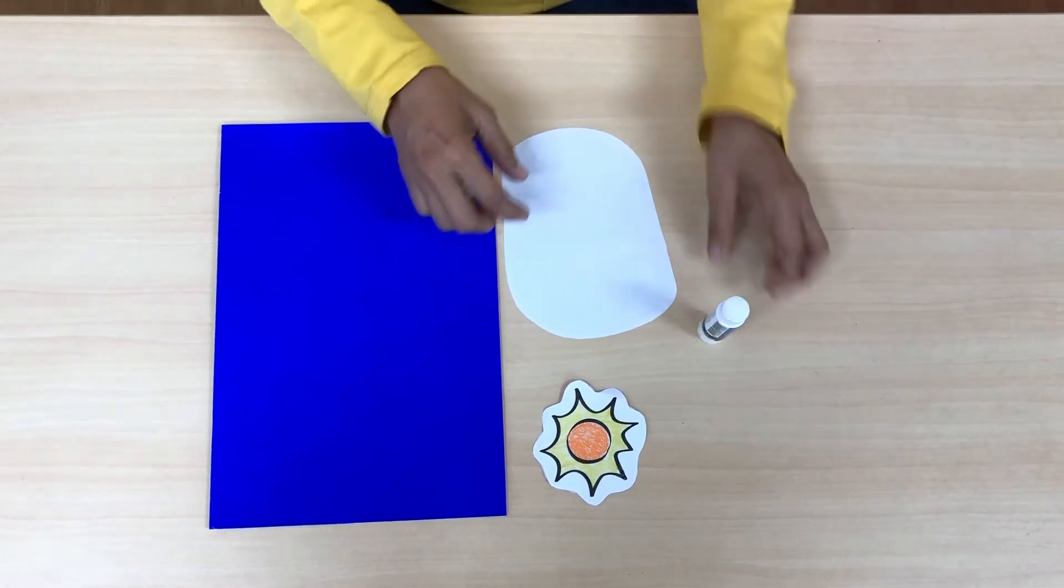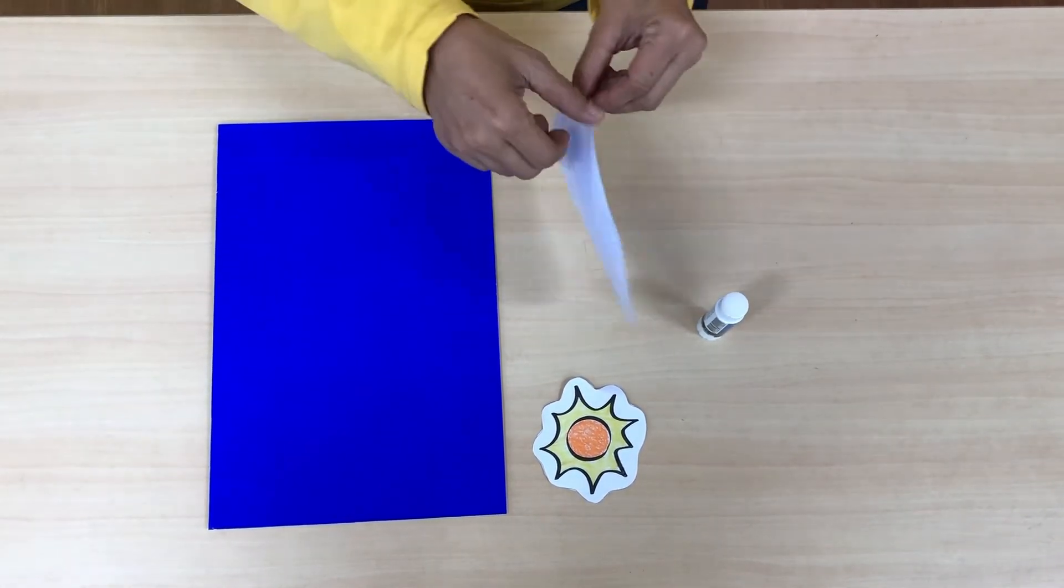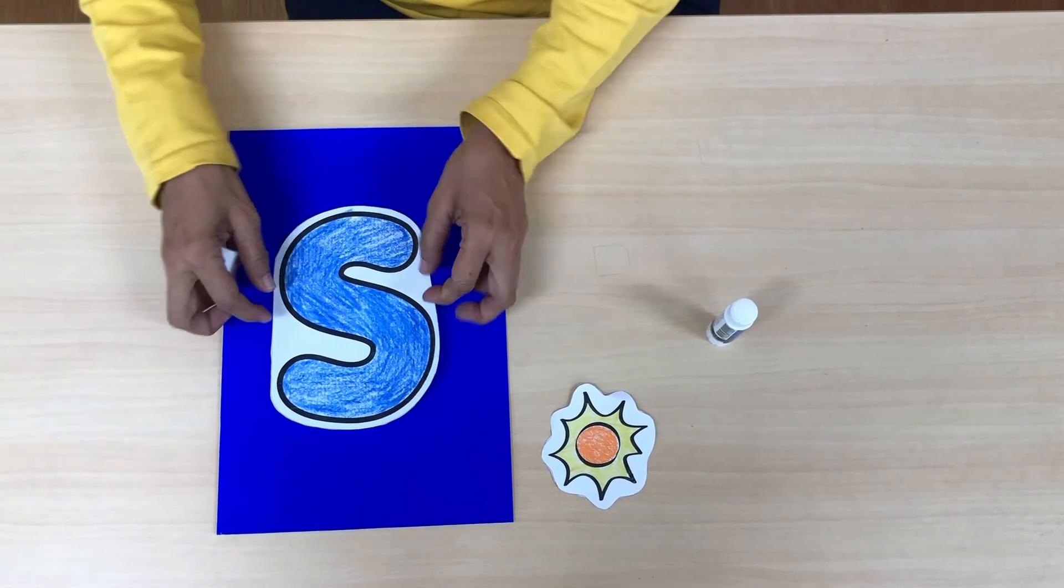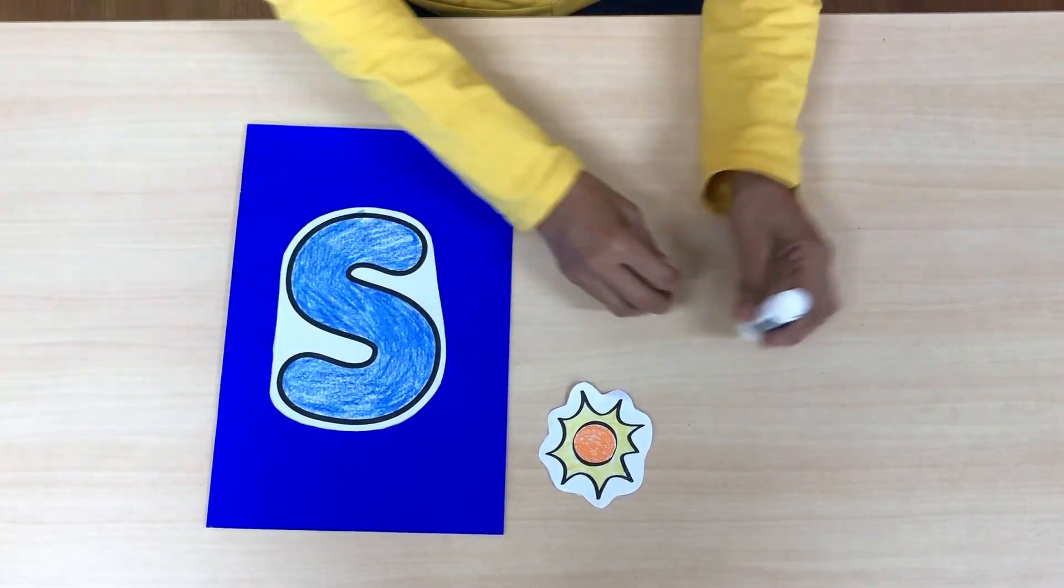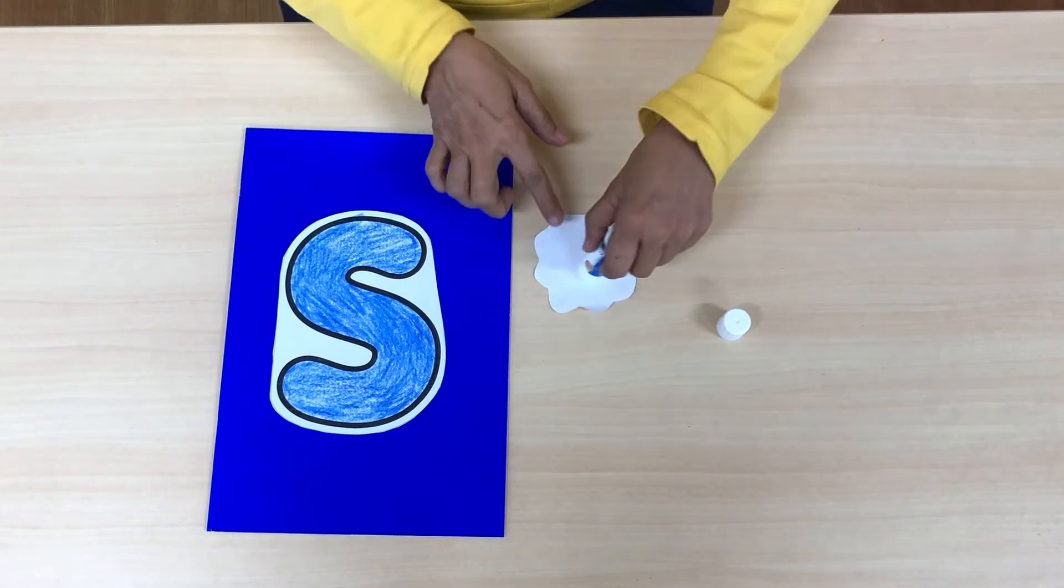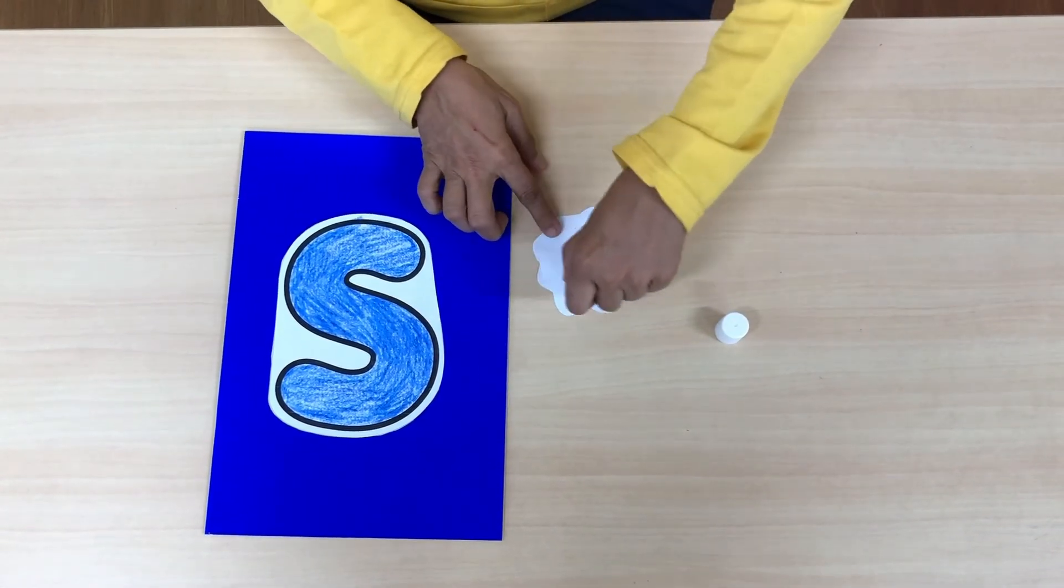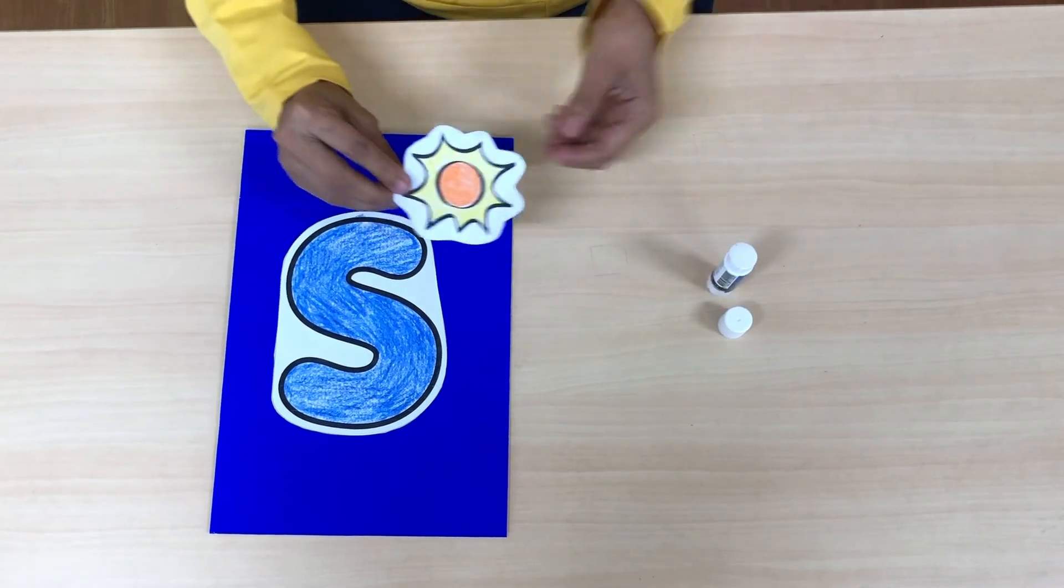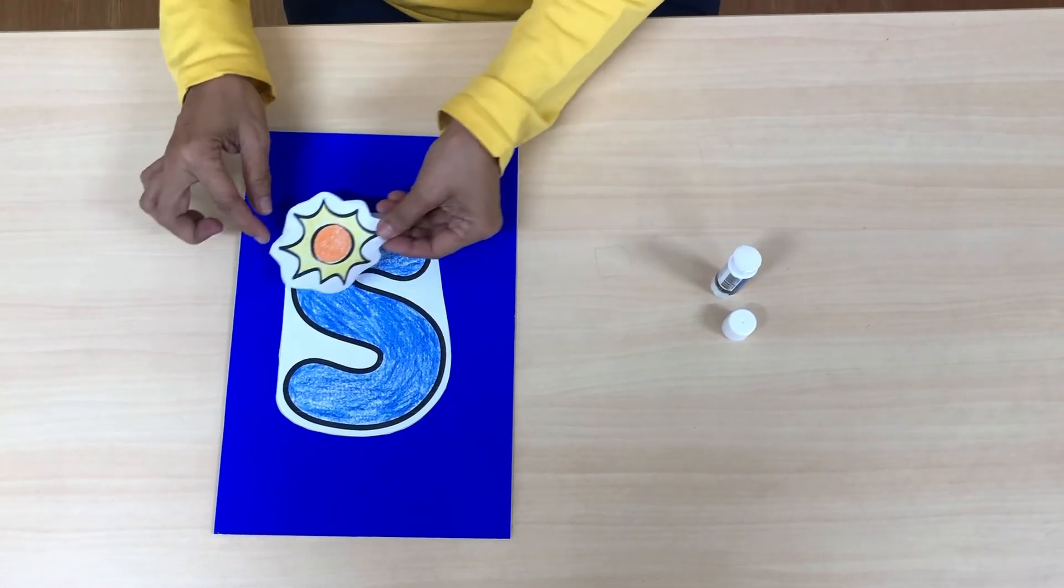Okay, if you finish you can paste it in the middle. Yeah, and then the next, glue around the white one. Finish, then you put letter S here, and then done.